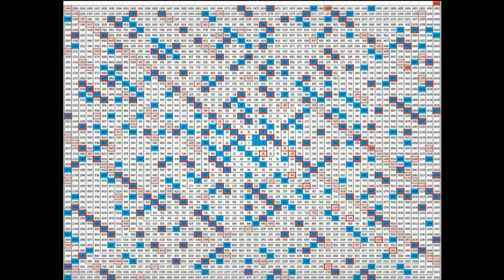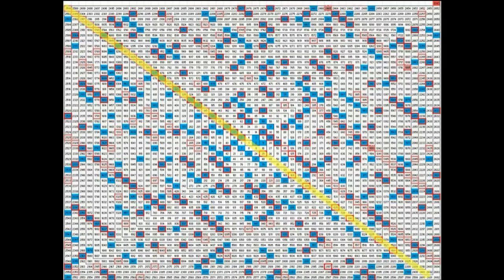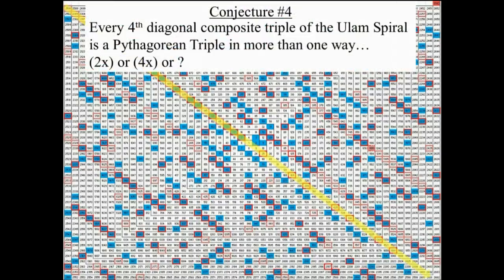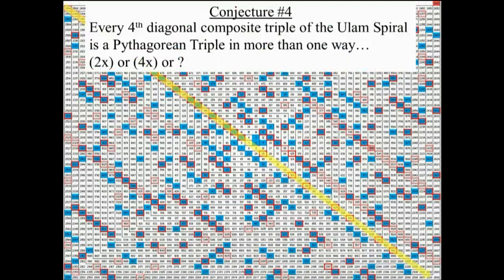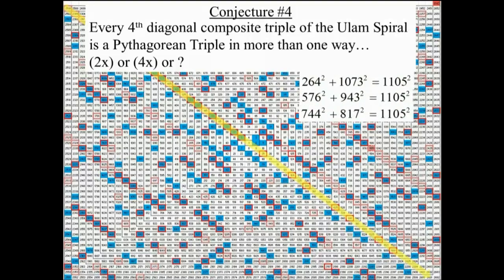To see conjecture number four, I had to make a larger Ulam spiral. This one approaches 2700. Conjecture number four says that every composite triple is a triple in more than one way, maybe two times, maybe four times. There are three numbers here that occurred four times: 1105, 1885, and 2465 all occurred four times. In other words, these are all the ways that you could make 1105 in a Pythagorean triple. Could a triple work six ways or eight ways? I don't know, I'd have to make a larger spiral and I'm not going to go down that road.